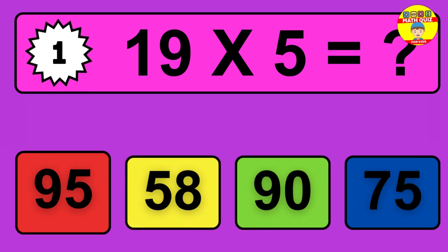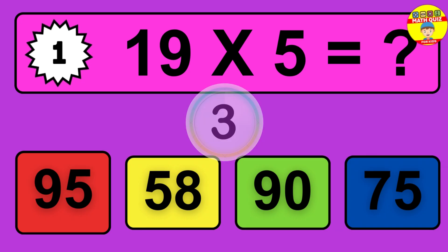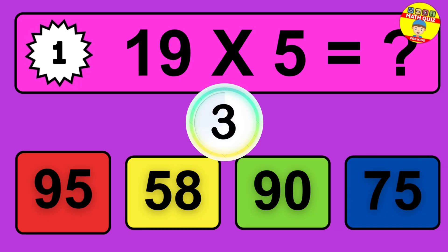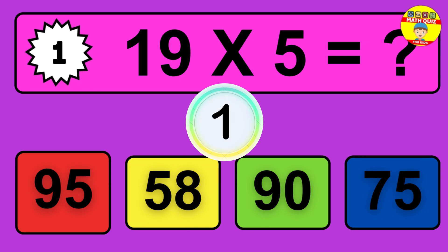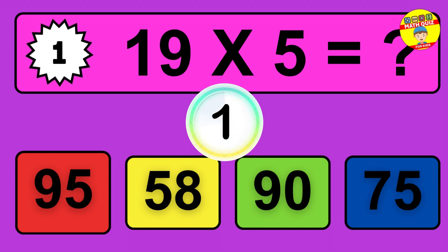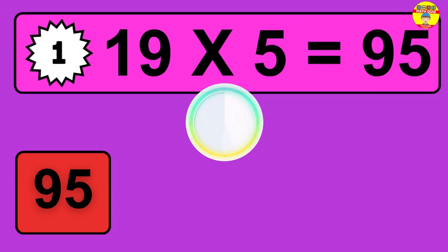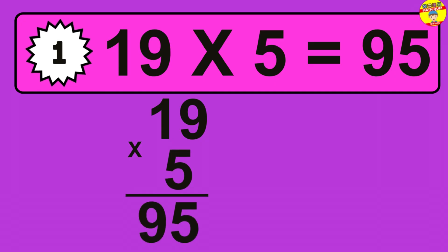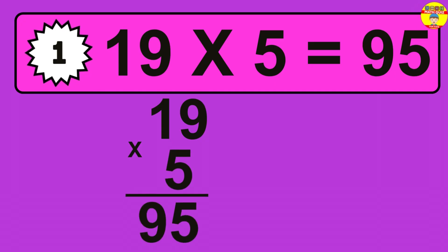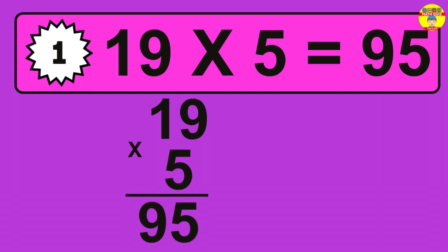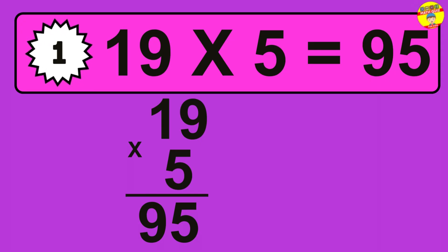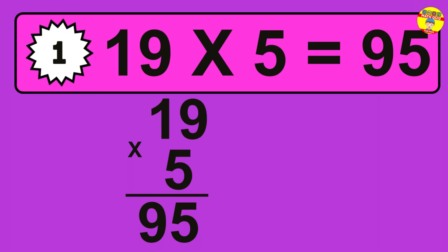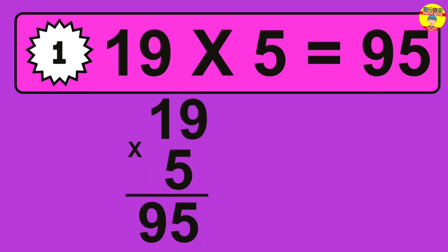Question 1. 19 times 5 equals what? The answer is 19 times 5 is 95. To calculate, we have 19 groups with 5 balls each one. So, how many balls do we have? 95 balls.